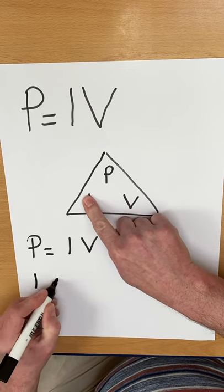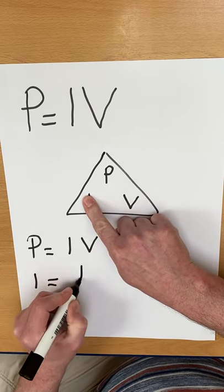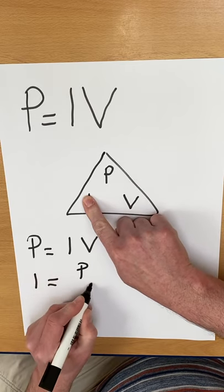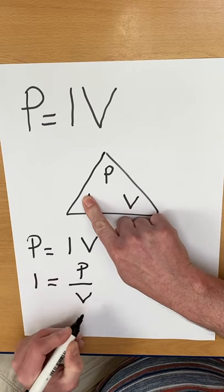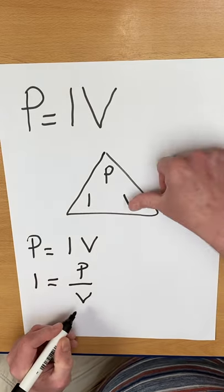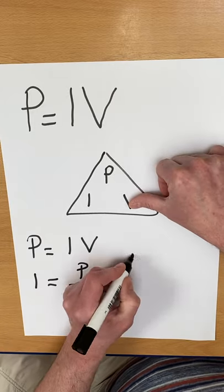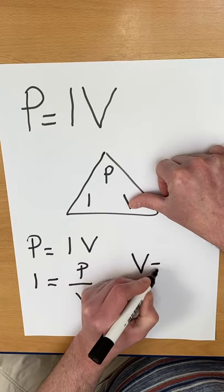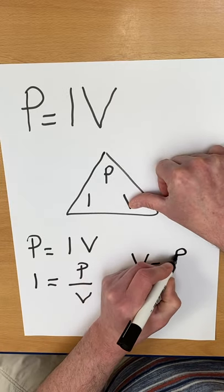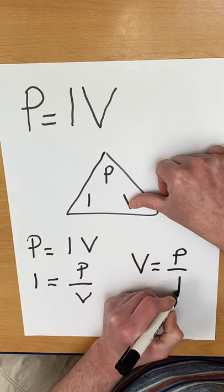Cover over current: current equals power divided by voltage. Cover over voltage: voltage equals power divided by current.